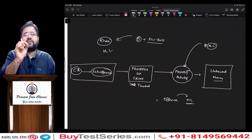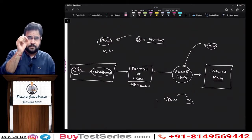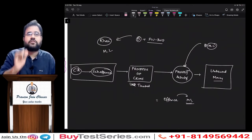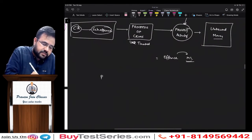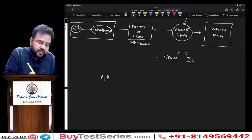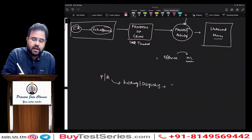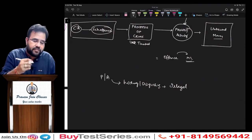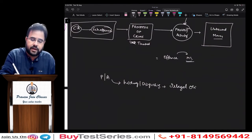If somebody asks you a simple definition of money laundering, I can give you a one-line definition: money laundering is nothing but a process or activity by which we are hiding — disguising — the illegal origin of money. If this process would not have been done, the total world would have come to know that you have done something wrong — proceeds of crime. But because of this process, today you are showcasing to the world that you have done very good business.